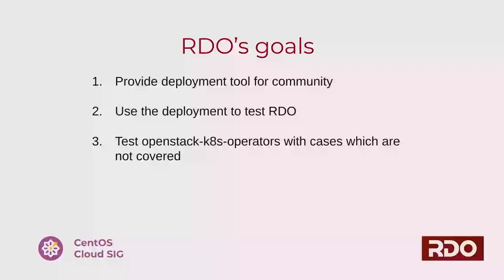We want something beyond packstack and puppet scenarios — we want a full deployment with a voting job indicating whether the deployment is OK or not. We also want to test the entire OpenStack Kubernetes Operators project with cases not yet covered — for example, we're not testing in any automated way against new versions of OKD. There was a recent release of a new OKD version, and we'd like to use our deployment to test it.